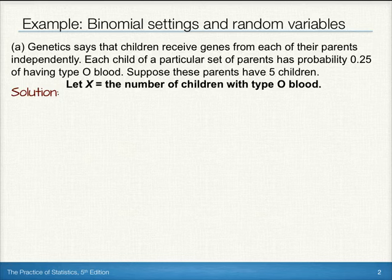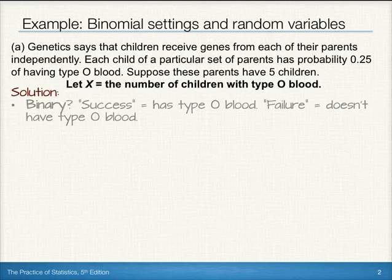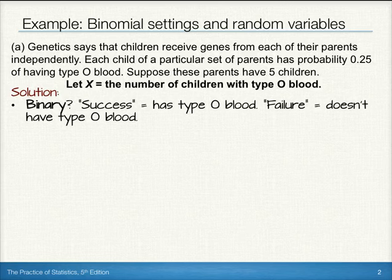To see whether or not this fits a binomial setting, we'll need to check our BINS — B-I-N-S. We'll start with whether or not we have a binary situation. If we define success as having type O blood and failure as not having type O blood, we can see that we do have two possible outcomes. So we do have a binary situation.